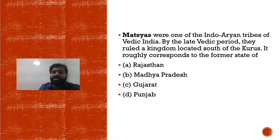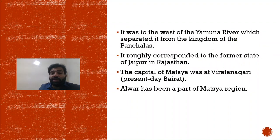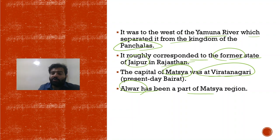The Matasya region roughly corresponded to the former state of Jaipur in Rajasthan, and the region of Alwar was also part of it. The capital of Matasya was at Viratnagri. Questions can be framed asking which present-day state corresponds to this region — the answer is Rajasthan. In the early Vedic period, Vishyapati was the head of a group of villages (Vishu). Group of villages = Vishu, headed by Vishyapati; head of village = Gramini; head of family (Graham) = Grihapati.